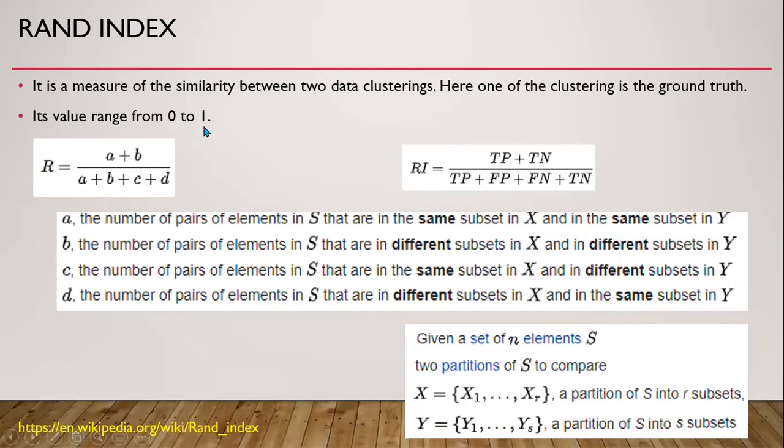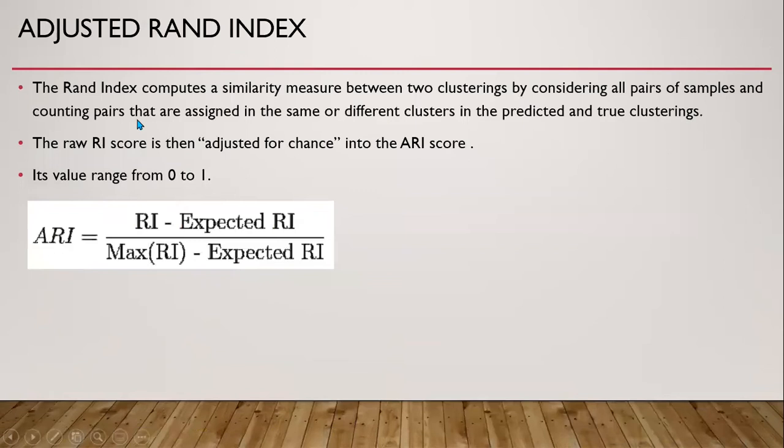The adjusted Rand index adjusts the raw Rand index score for chance. Its value also ranges from 0 to 1, and this is the formula for the adjusted Rand index.